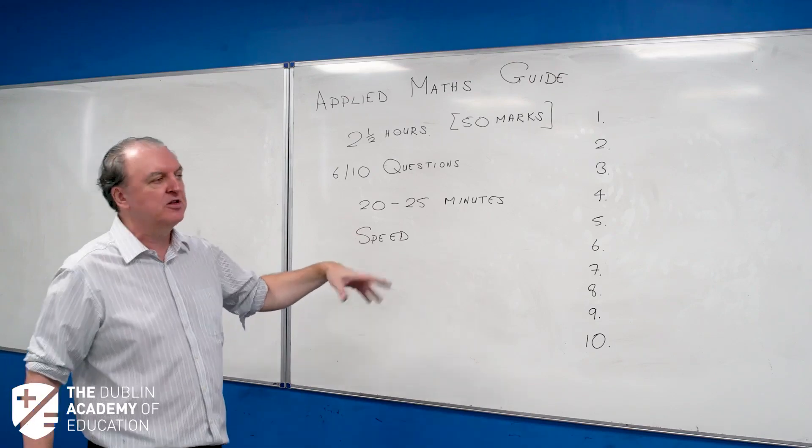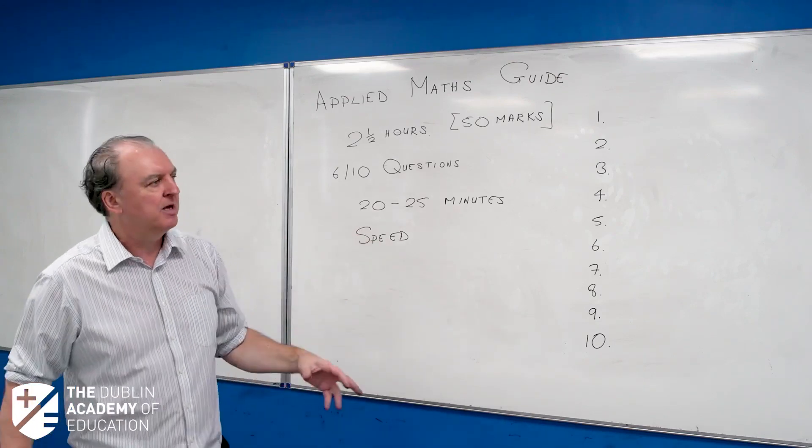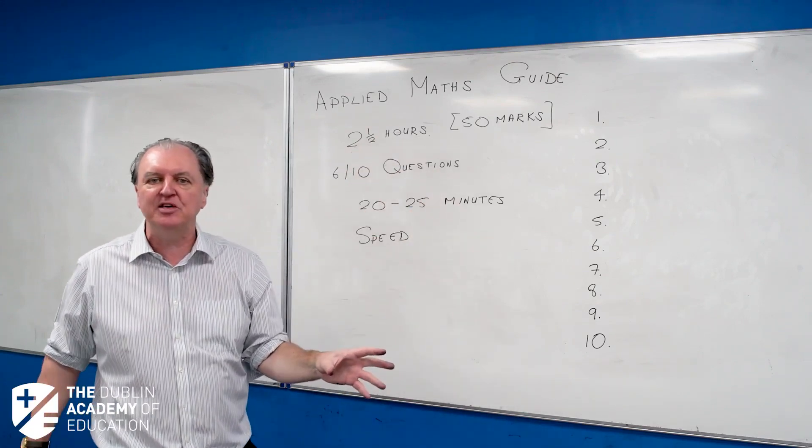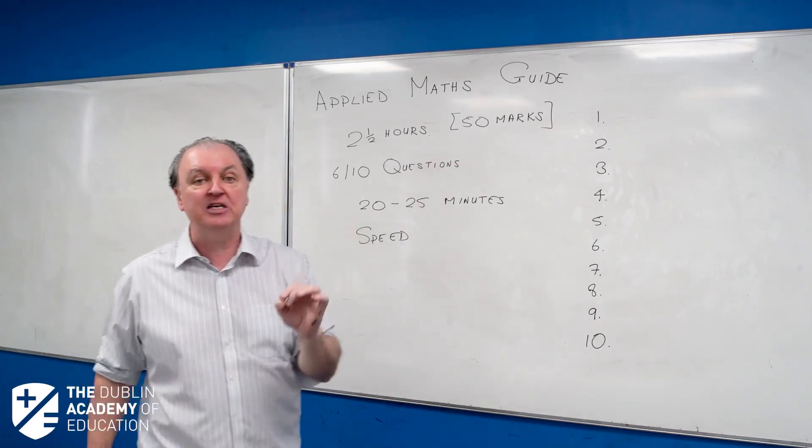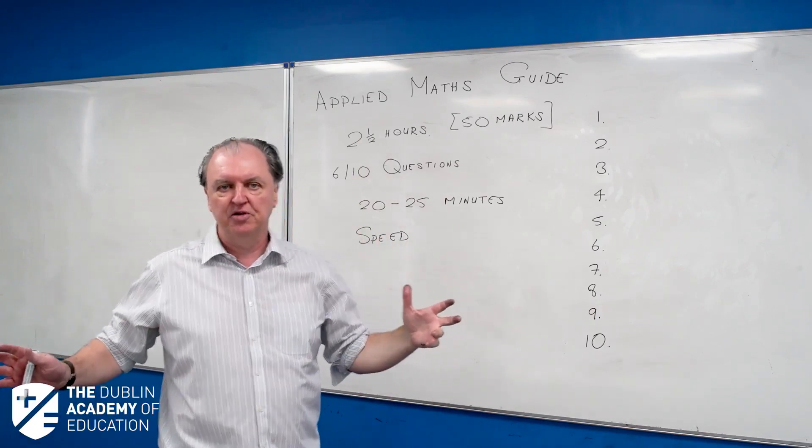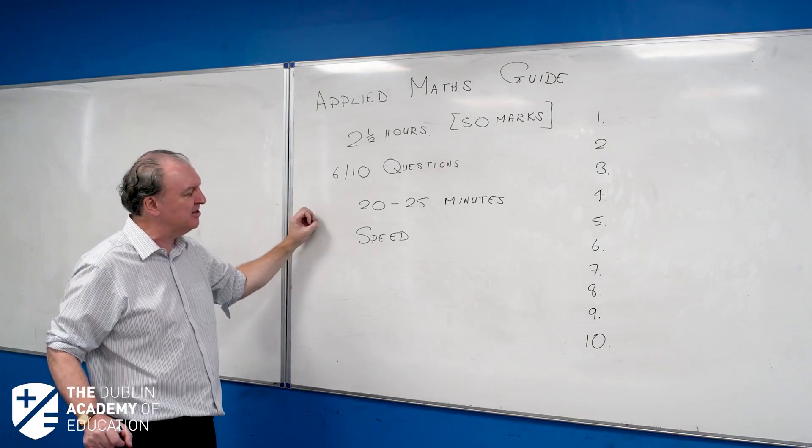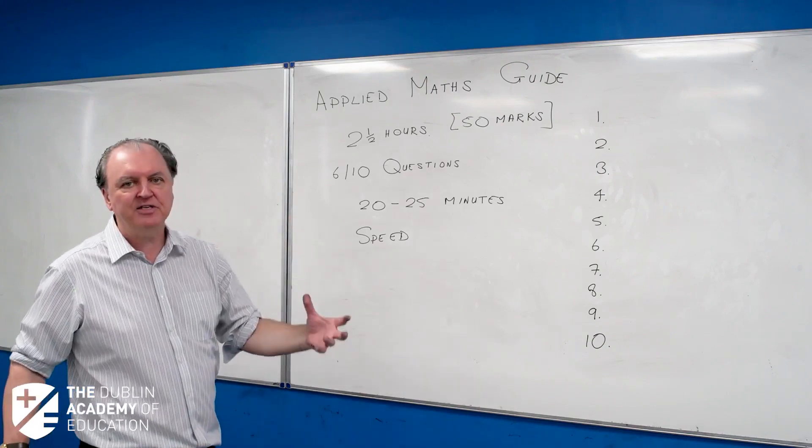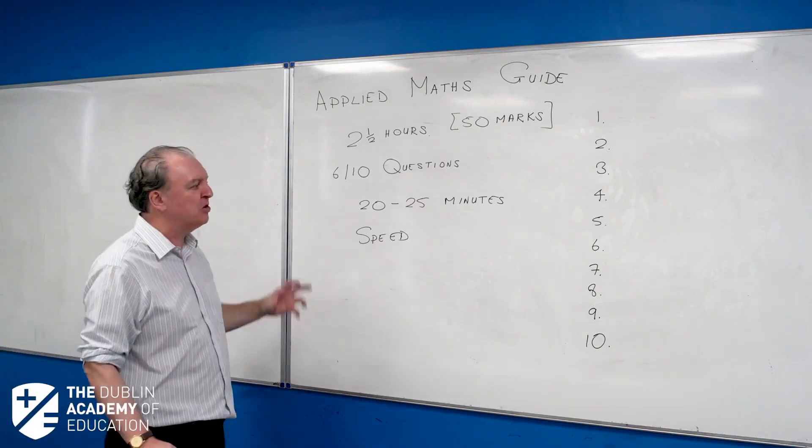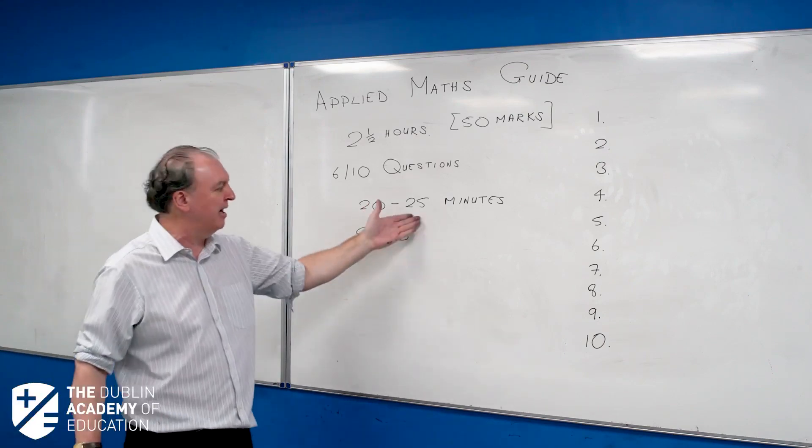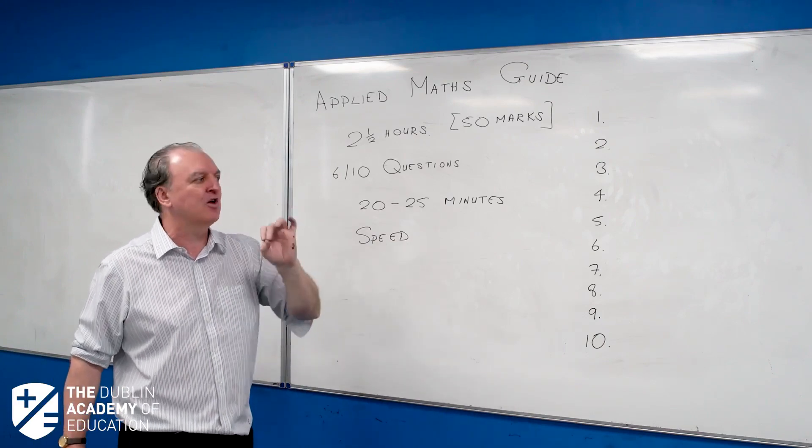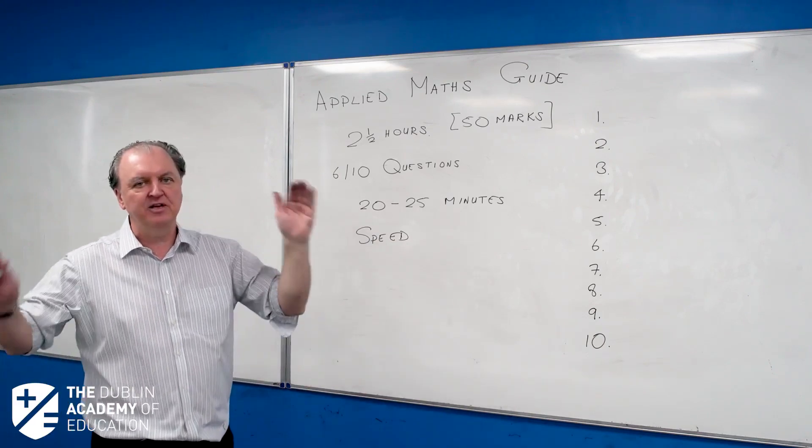I've done rechecks where students thought they did very badly because they didn't get the right answers. But they did ninety, ninety-five percent of the question. They just didn't finish it off and get the right answer. They might have lost five marks out of fifty, and they got their H1s or H2s. So you've got to practice, build up speed, have your techniques, and don't obsess about getting that final answer. Of course it's nice to get it, but don't obsess about it. I'm obsessing about my time. When I get to the end of my twenty-five minutes, I'm moving on. I need to get six full questions done. If I leave out half a question, that's a disaster.